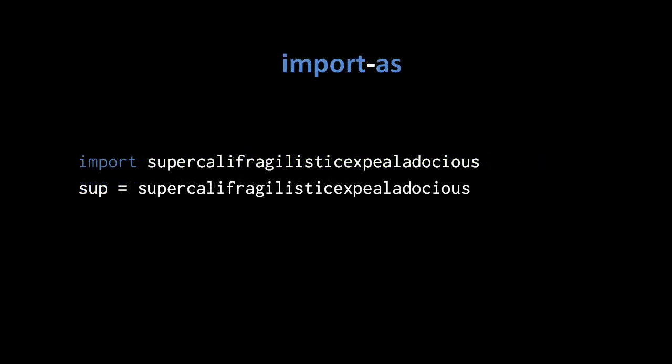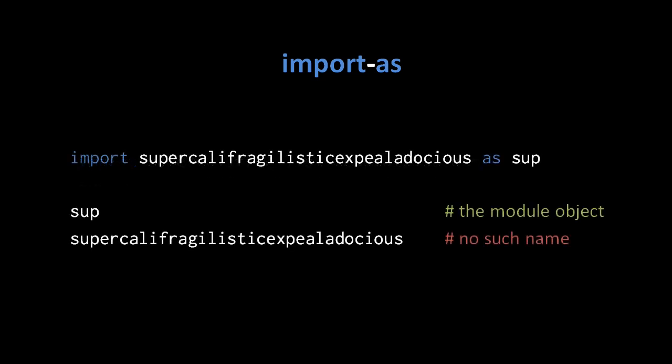Because some module and package names are obnoxiously long, it makes sense that after import you'd want to assign these modules to a more convenient name. Python has an optional clause in an import statement called as. If we import supercalifragilisticexpialidocious as sup, it imports that module but assigns the module object to just the variable sup. So using sup resolves to the module object, but supercalifragilisticexpialidocious itself doesn't resolve to anything in the local namespace — it would be an exception to try and use that name.